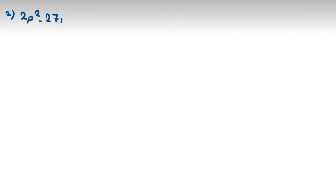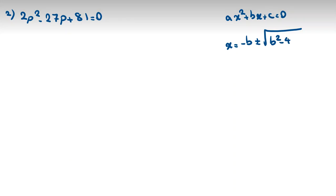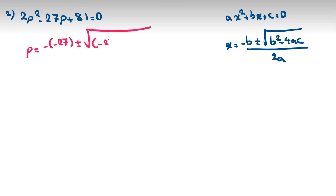Let's analyze the second factor: 2p squared minus 27p plus 81 equals 0. Using the quadratic formula, where a equals 2, b equals negative 27, c equals 81: p equals negative b plus or minus square root of b squared minus 4ac, all over 2a. So p equals 27 plus or minus square root of 729 minus 4 times 2 times 81, all over 4.